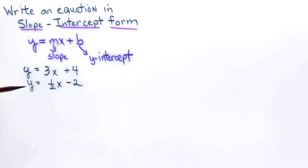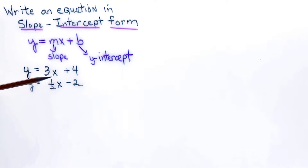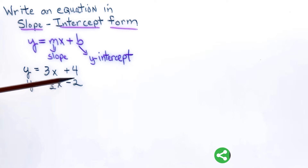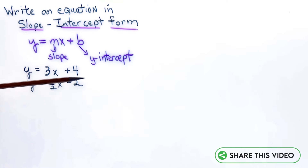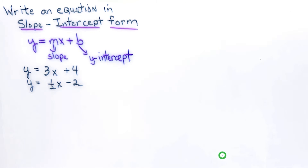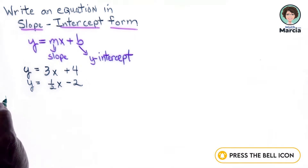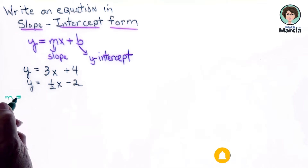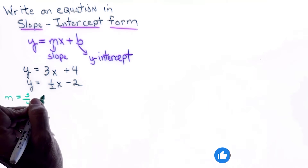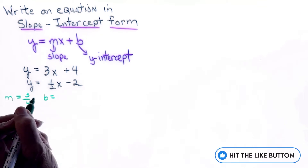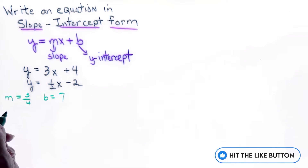Here y equals one-half x minus 2: the slope is one-half and since it says minus 2, the y-intercept is negative 2. So when given the slope and the y-intercept, if I have a slope of 3/4 and a y-intercept of 7, the equation for the line is going to be y equals three-fourths x plus 7.